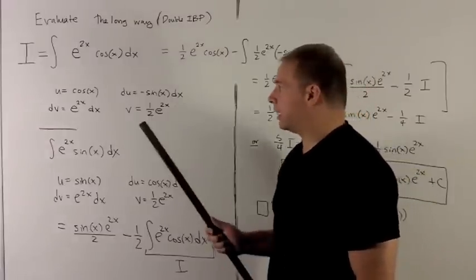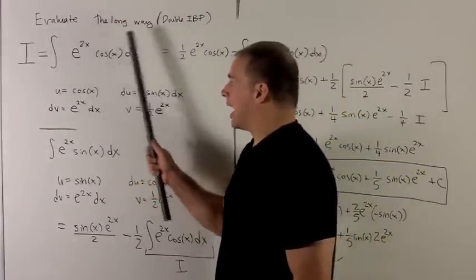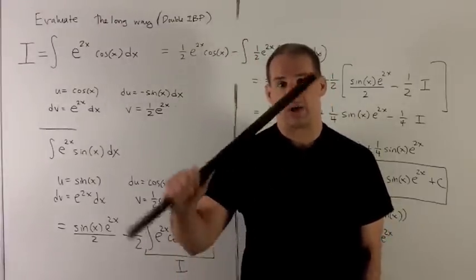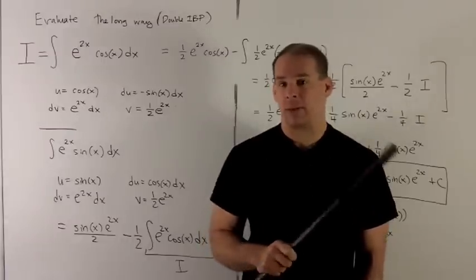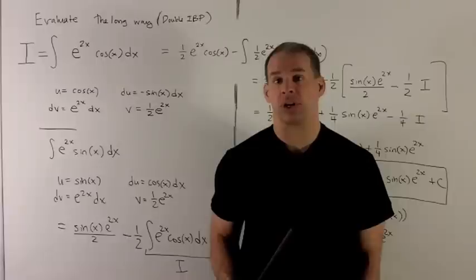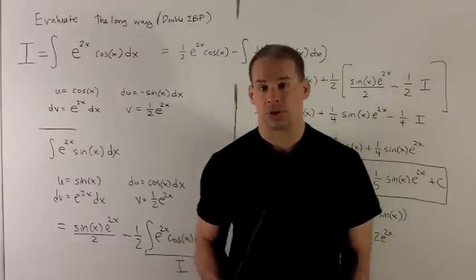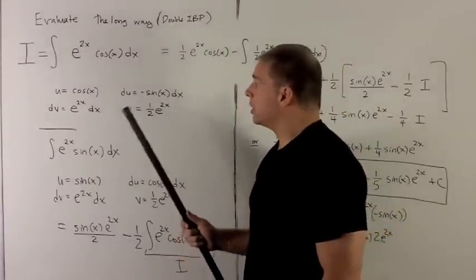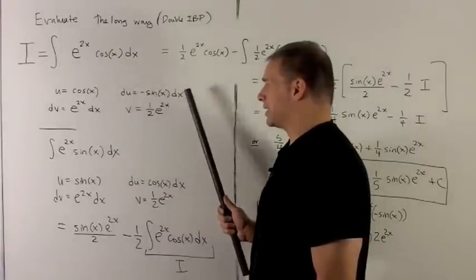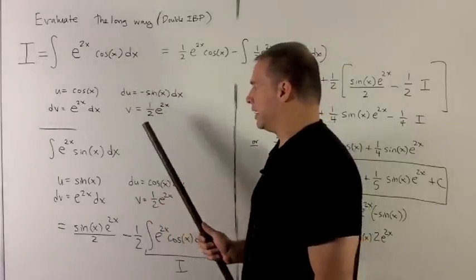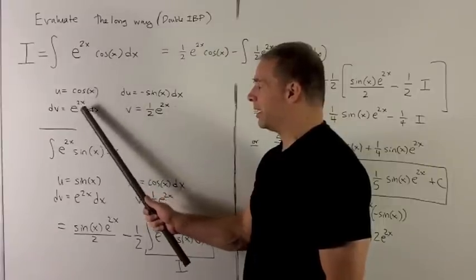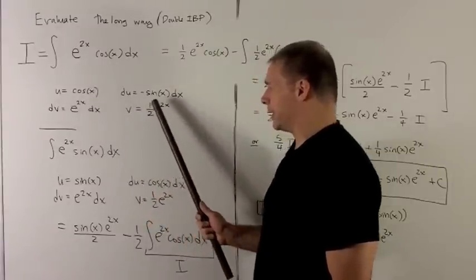So the idea is going to be, if I call this big thing here i, the double integration by parts is going to eventually return i on the right hand side, and then we just bring it back over and what's left over is going to be our answer up to a constant. So let's grind it out. So with these choices, our du is minus sine x dx, and our v is e to the 2x, and then when we do the u substitution, we'll have to divide by the derivative of the top, which is just going to be a 2.